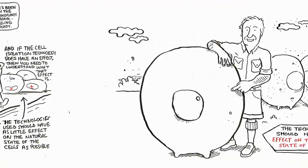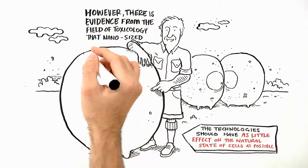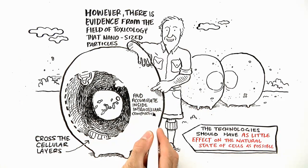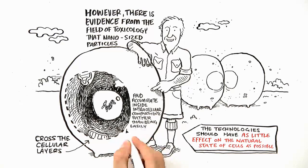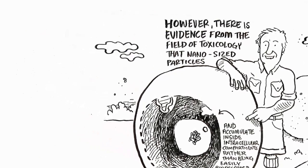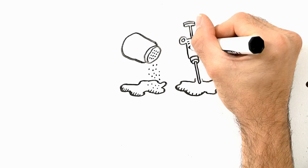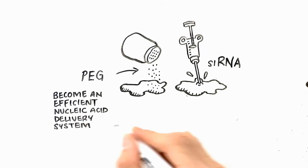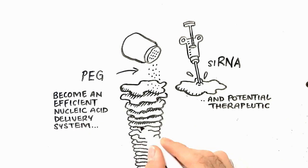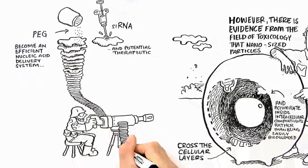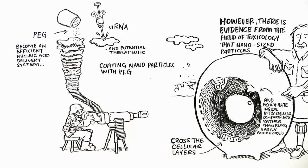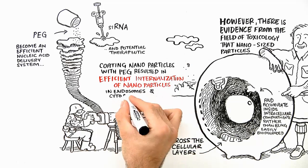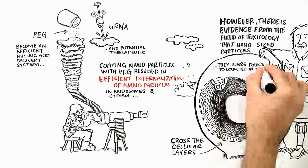However, there is evidence from the field of toxicology that nanoparticles cross cellular layers and actually accumulate inside intracellular compartments, rather than being easily biodegraded. Indeed, this has been seen as a benefit when nanoparticles are combined with siRNA to become an efficient nucleic acid delivery system and a potential therapeutic. In 2006, Dr. Shana and his team showed that coating nanoparticles with PEG resulted in efficient internalization of nanoparticles in endosomes and cytosol, and they were found to localize in the nuclear region.